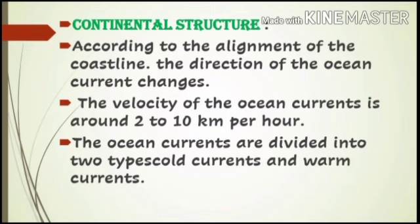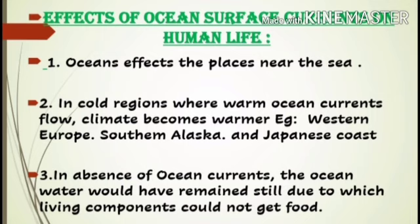Ocean currents are divided into two types: cold currents and warm currents. Cold currents bring cold water from the bottom to the surface, and warm currents move warm water from the surface to the bottom. Ocean currents especially affect the climate of regions having proximity to the sea — the places which are near the sea are more affected by ocean currents.